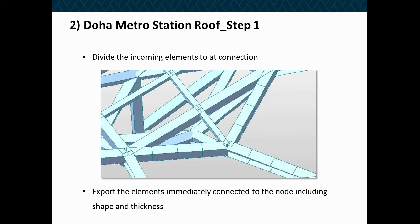We start with our frame and identify one of the complex connections. We divide the incoming members to that connection so that the closest members to the node finish outside of the fabricated connection — accounting for all overlaps within the system. We then extract that node with its connecting elements and export it to DXF. The export DXF tool in MIDAS is incredibly powerful: even in the frame situation, it will export — or give you the choice to export — the shape, the centerline, and the thickness, or combinations thereof.